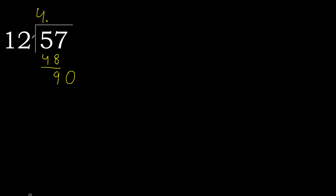90. 12 multiplied by 8 is 96 — 96 is greater. 12 multiplied by 7 is 84 — 84 is not greater.